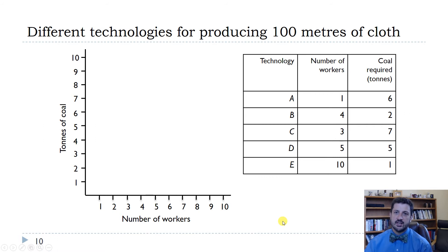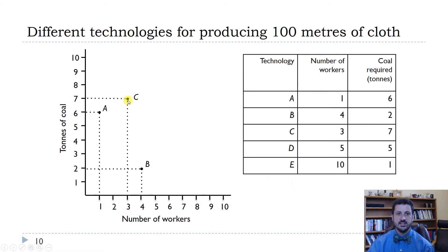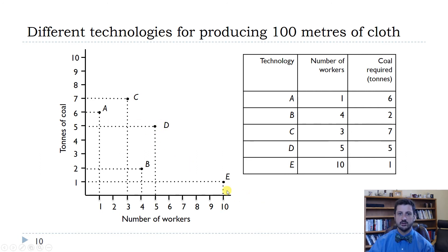Let's graph these technologies with the number of workers on the horizontal axis and the number of tons of coal on the vertical axis. Here's A, which uses more coal and fewer workers. B uses more workers than A and fewer tons of coal. C uses seven tons of coal and three workers. D uses five tons of coal and five workers. And E is the most labor intensive — 10 workers and one ton of coal. Remember, we're getting the same output — 100 meters of cloth — for all of these combinations.